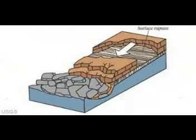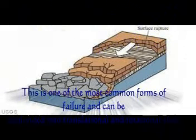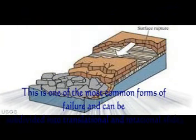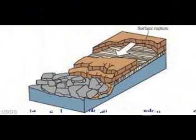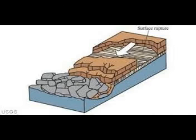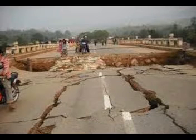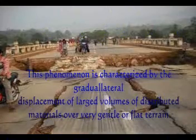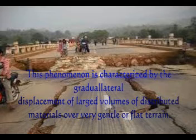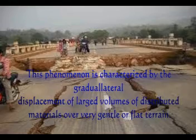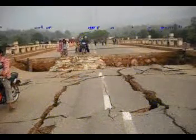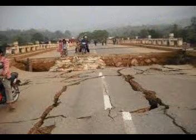Slide is one of the most common forms of failure and can be subdivided into translational and rotational slides. Rotational slides are sometimes called slumps because they move with rotation. Translational slides have a planar or two-dimensional surface of rupture. Slides are most common when the toe of the slope is undercut, with a moderate rate of movement and the coherence of material retained. Spread is characterized by the gradual lateral displacement of large volumes of distributed materials over very gentle or flat terrain. Failure is caused by liquefaction, where saturated loose material with little or no cohesion such as sands or silts is transformed into a liquid-like state, triggered by rapid ground motion during earthquakes.